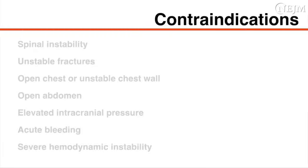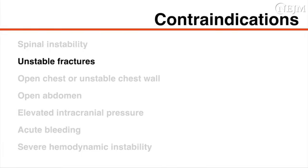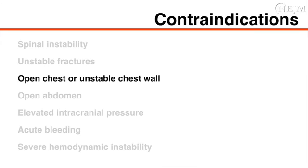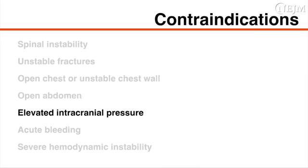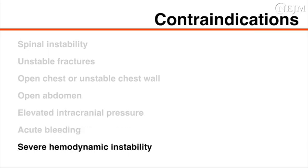Contraindications to prone positioning include the presence of spinal instability, unstable fractures, an open chest or an unstable chest wall, an open abdomen, elevated intracranial pressure, acute bleeding, and severe hemodynamic instability.